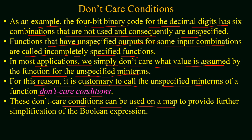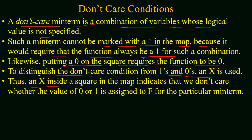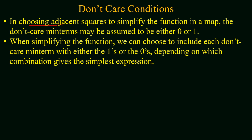Don't care conditions can be used on a map to provide further simplification to a boolean expression, because these don't care conditions can have a value of one or zero. A don't care min term is a combination of variables whose logical value is not specified. Such a min term cannot be marked with a one in the map, because that would require the function to always be one; similarly, putting a zero requires the function to be zero. To distinguish don't cares from ones and zeros on a map, 'x' is used — an x inside a square in the map indicates that we don't care whether zero or one is assigned to the function for that particular input combination.